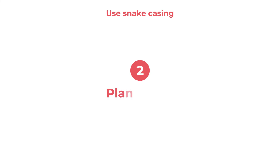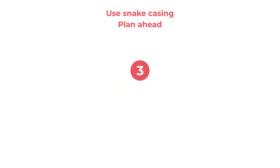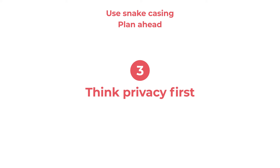Number two: plan ahead. Ask yourself which scope your parameters have — user, event, or even session and item. If it's a numeric value where calculations make sense, make it a metric. Involve your colleagues, as other departments may have input, especially since this data is likely to be piped into your data hub for analysis. Number three: think privacy first — consider whether a data point could be considered personal data. A good example is collecting the string of a free text field like first and last name, or any personally identifiable information.